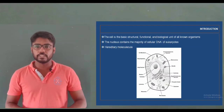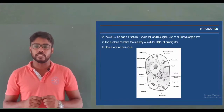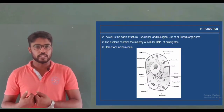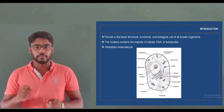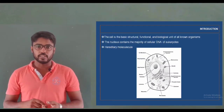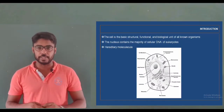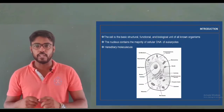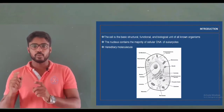We know that the cell is the basic structural and functional unit of all living organisms. Inside the cell, there are different types of cell organelles like mitochondria, chloroplasts, endoplasmic reticulum, ribosomes, and nucleus. Inside the cell, the DNA is located in the nucleus. Apart from the nucleus, some other cell organelles like mitochondria and chloroplasts also contain some amount of DNA. This DNA is considered a genetic material and therefore it is called the hereditary molecule of the organism. It is able to transfer genetic information from the parent to the offspring.